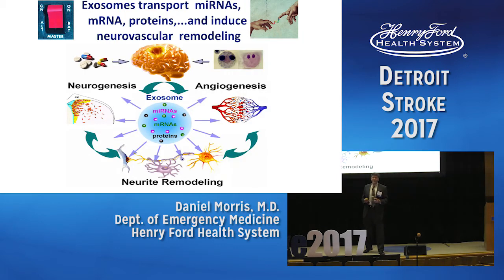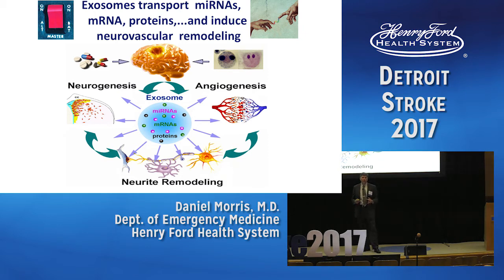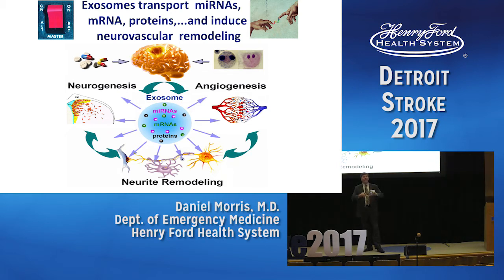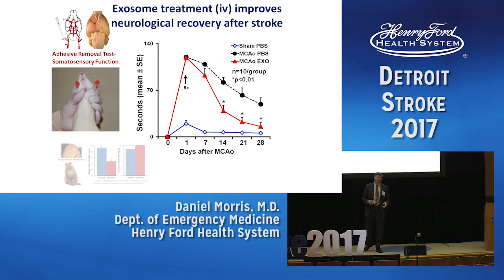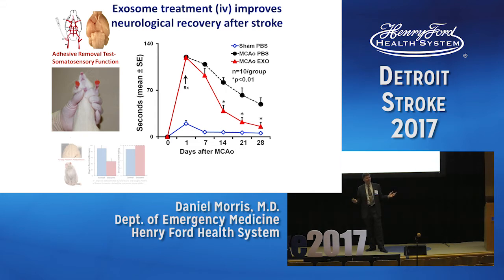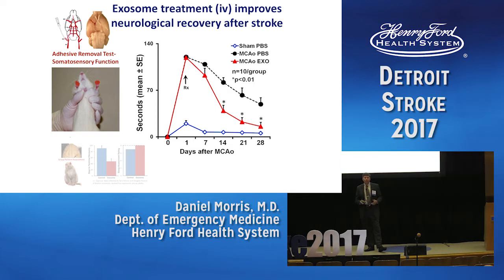What we can do now, instead of injecting the mesenchymal cell into the rat — or potentially humans, which could promote complications like coagulation problems — is just grow these cells, isolate the exosomes, and have the exosomes orchestrate neurogenesis, angiogenesis, and neurite remodeling. In a different rat using the same test, instead of injecting mesenchymal stromal cells, we injected these exosomes isolated from the cell culture dish. They were injected one day after the stroke, and as you can see, recovery almost went back to baseline.